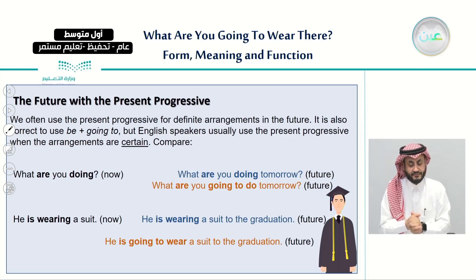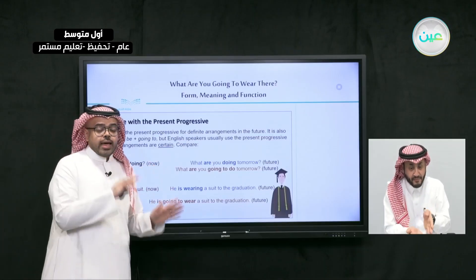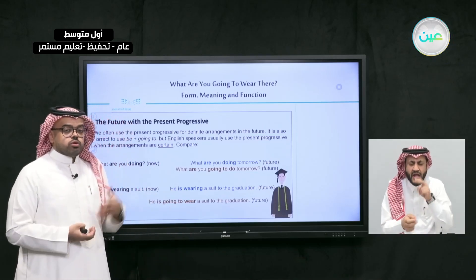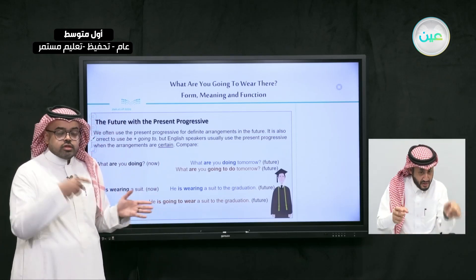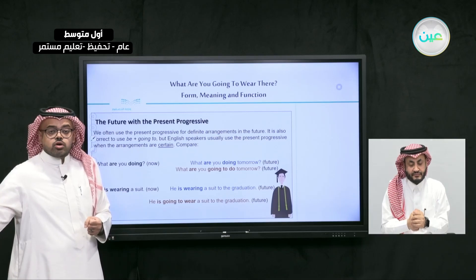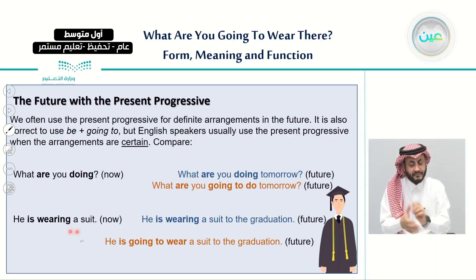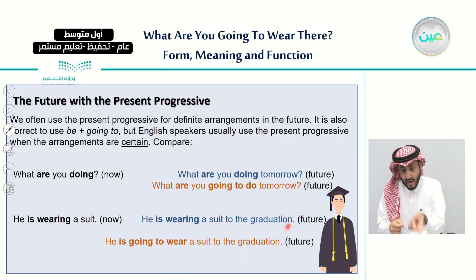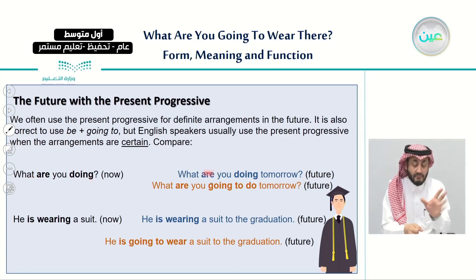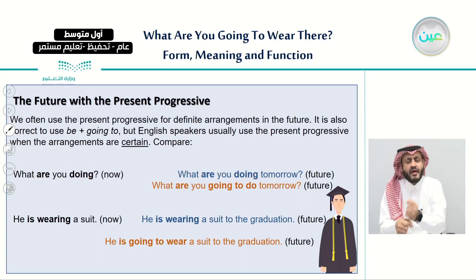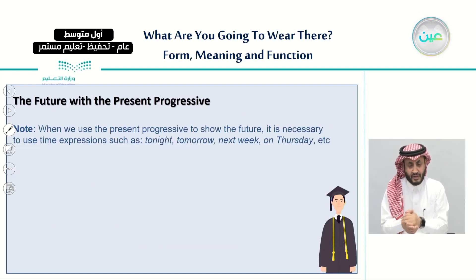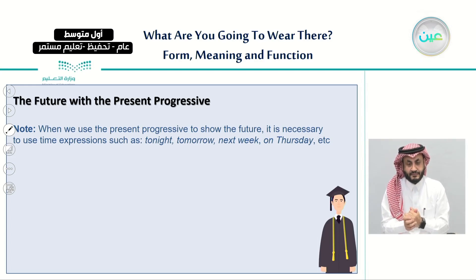We can use the present progressive to talk about plans that are certain and will happen in the future. To differentiate between actions happening right now and future actions, we use time expressions. 'He is wearing a suit' — no time expression means right now. 'He is wearing a suit to the graduation' — that occasion is in the future. Similarly: 'What are you doing?' versus 'What are you doing tomorrow?'